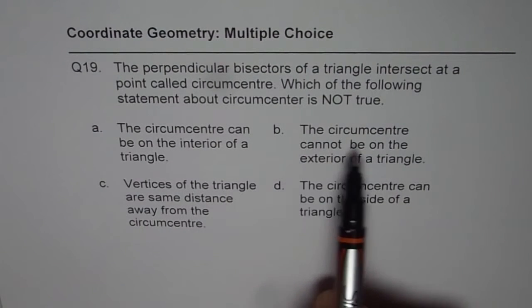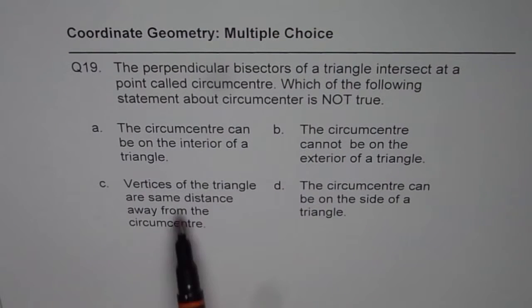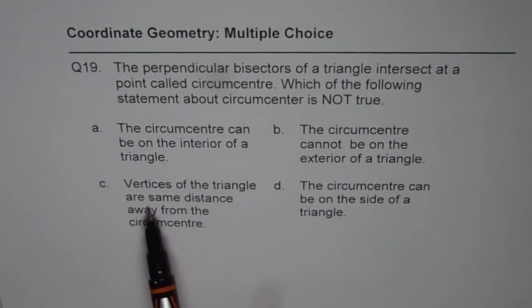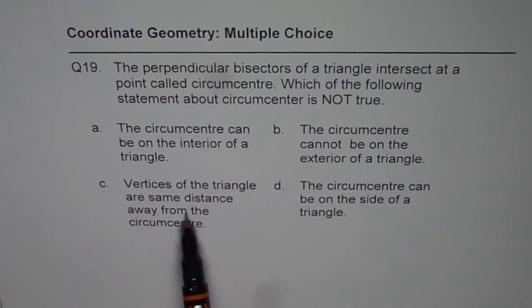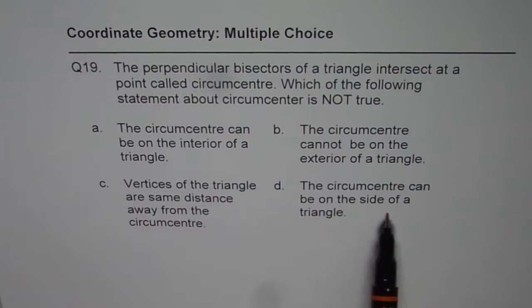B is circumcenter cannot be on the exterior of a triangle. C is vertices of the triangle are same distance away from the circumcenter. And D is the circumcenter can be on the side of a triangle.